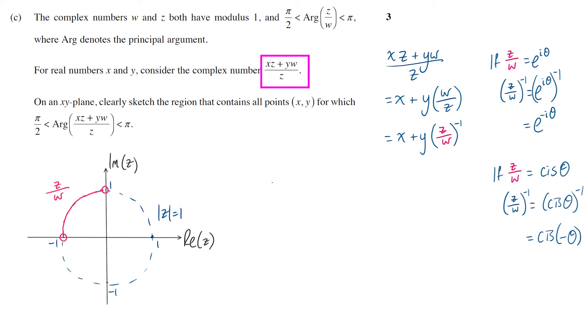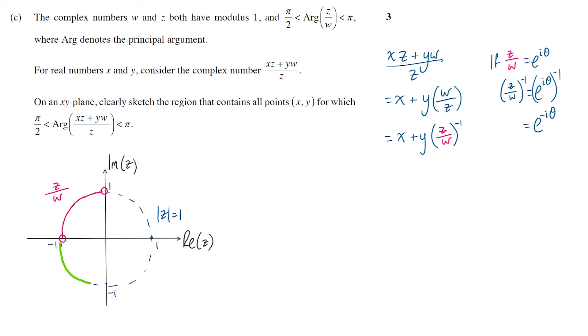Okay, so we knew that Z over W was in quadrant 2 up here with a modulus of 1 and an angle somewhere between π/2 and π. Having reversed that angle now to between negative π and negative π/2, W over Z will be on this arc of the circle down in quadrant 3. Again, the modulus is 1, that has not changed.